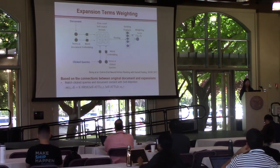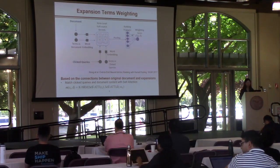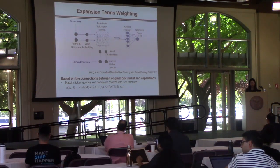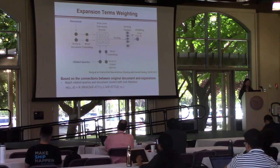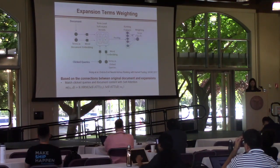Now we have all the click queries and the candidate terms. We rank the expansion terms based on their connections with the original document. Specifically, we use the same neural ranker, KNRM, which is our base ranker, to match the document and the expansion field. We then use this match score as an attention score to rank our expansion terms.